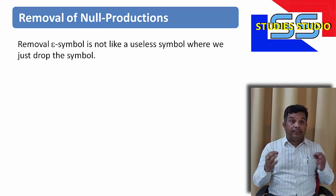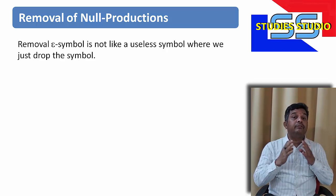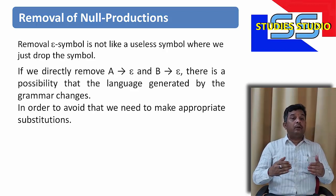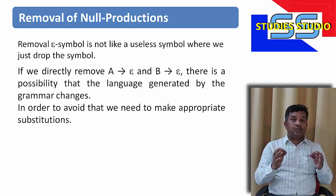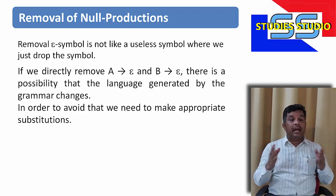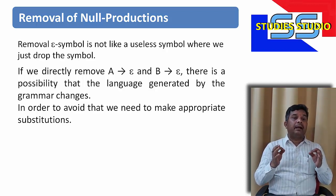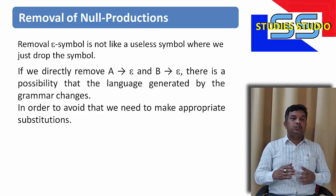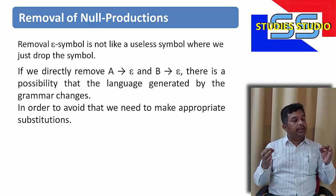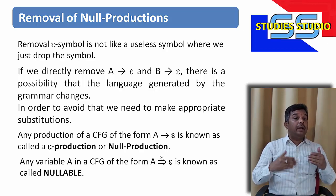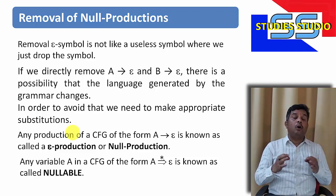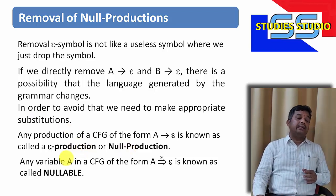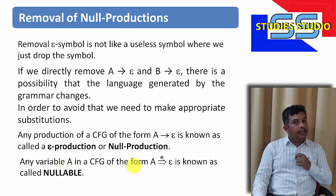Removal of epsilon productions is not like removal of a useless symbol where we just drop the symbol. If we directly remove a production of the type A derives epsilon or B derives epsilon, there is a possibility that the language generated by the grammar changes. So to avoid that, we need to make appropriate substitutions while removing epsilon productions. Any production of the form A derives epsilon is known as an epsilon production or a null production.